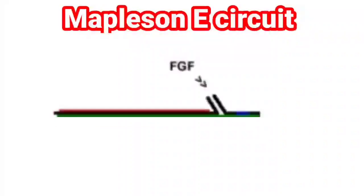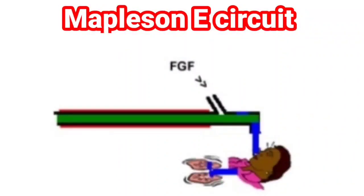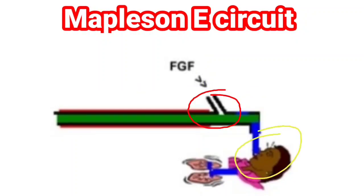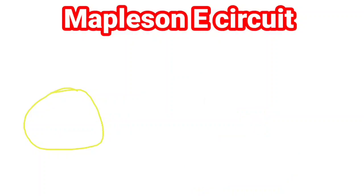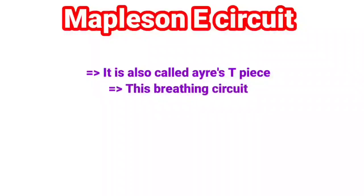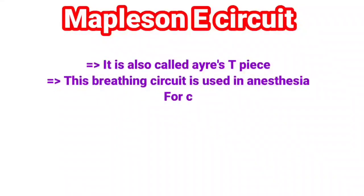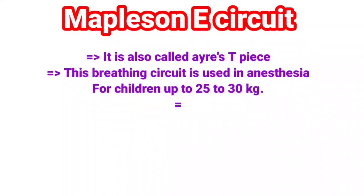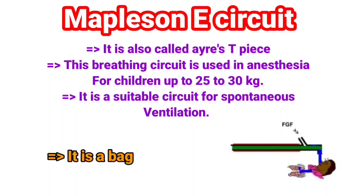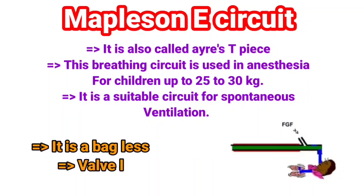Mapleson E circuit. It looks like an inverted T-shape, with three open parts: the fresh gas inlet, the patient end, and the reservoir bag end. It is also called Ayre's T-piece. This breathing circuit is used in anesthesia for children up to 25 to 30 kg. It is a suitable circuit for spontaneous ventilation. It is a bag-less, valve-less circuit.